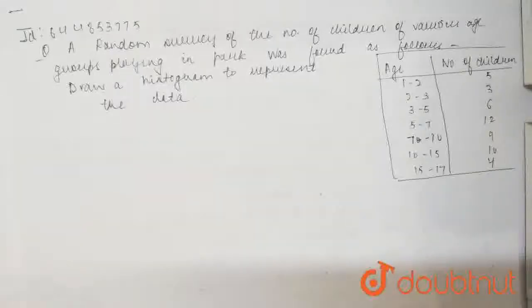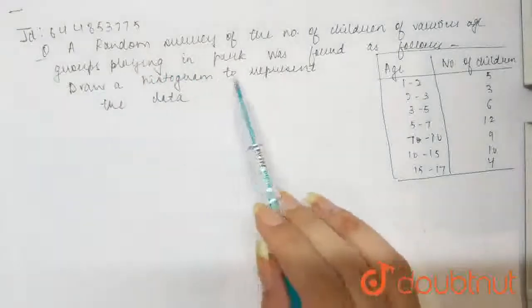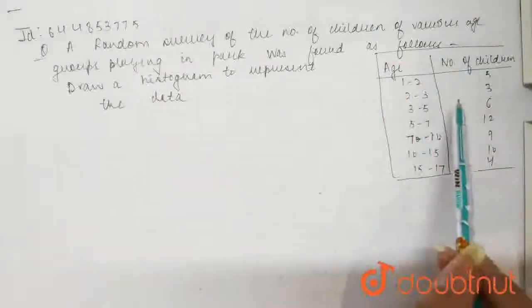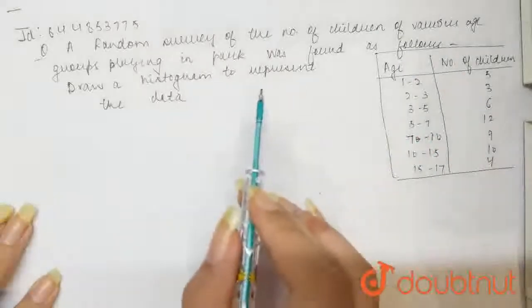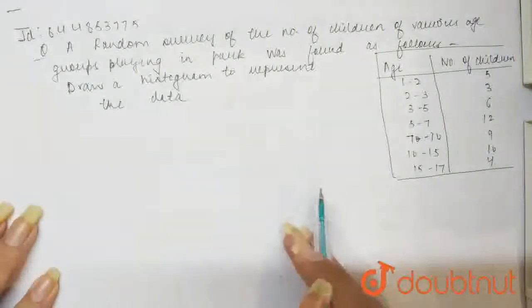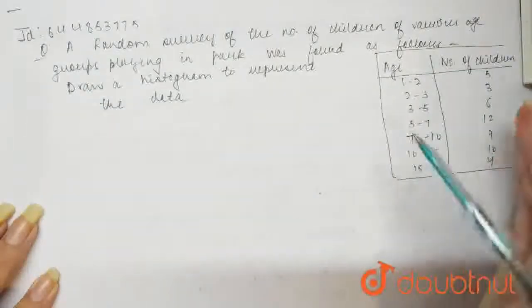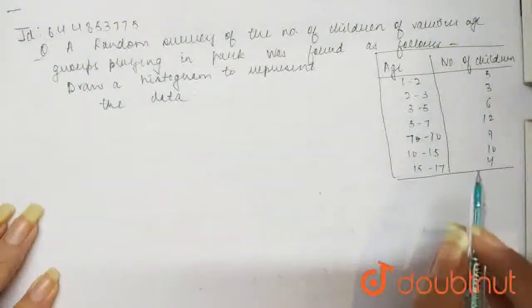Hello everyone, so the question is a random survey of the number of children of various age groups playing in the park was found as follows. So this is your age group, this is your table. So we have to draw the histogram. We know that here areas of the rectangles are basically proportional to the frequency of histogram.